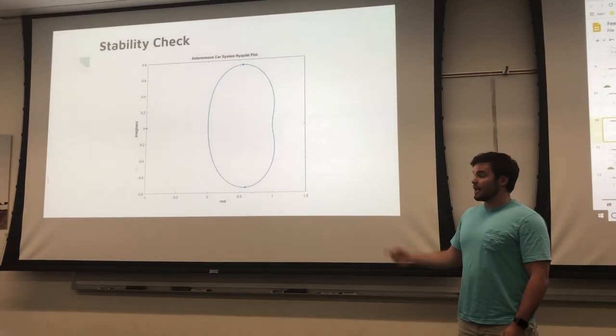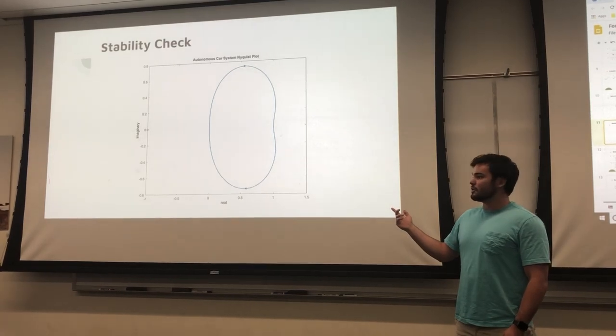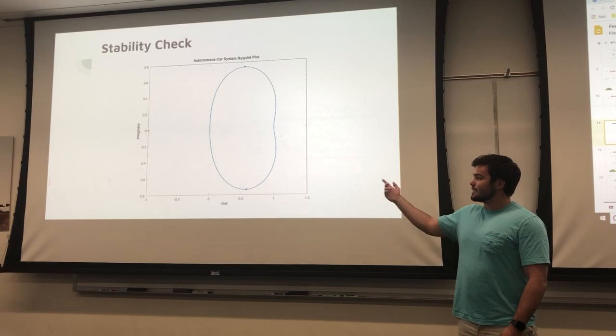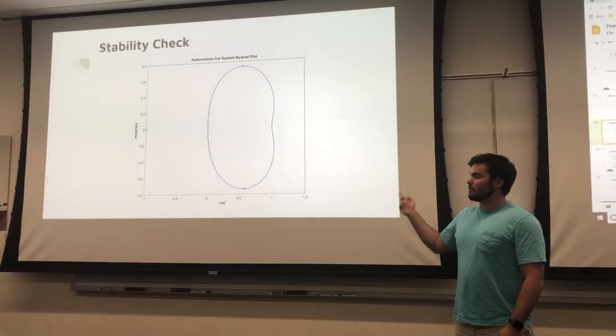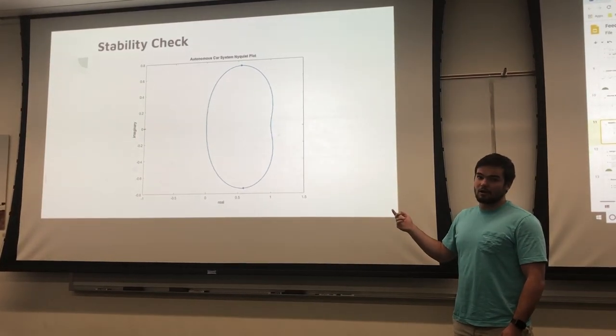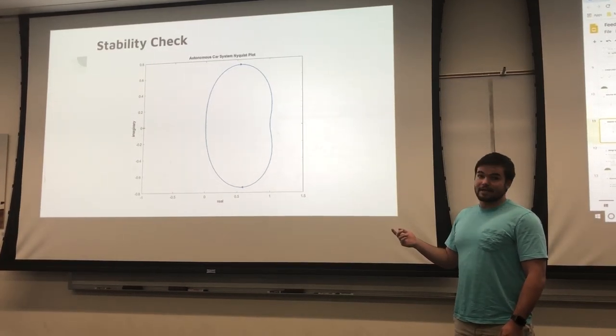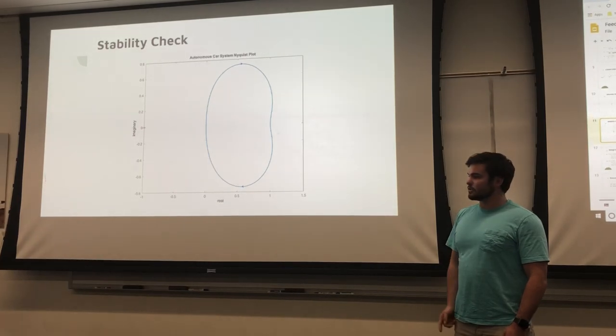With the Nyquist plot, we can determine that our closed-loop transfer function is BIBO stable. As you can see, there are no encirclements clockwise of negative one, and all the poles on our open-loop transfer function are real values. That means it is a stable transfer function.